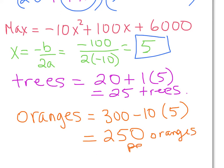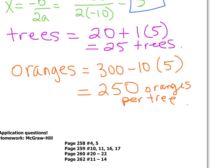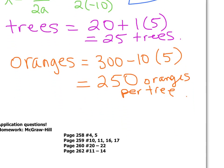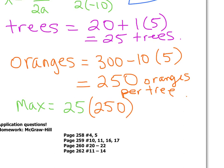Our maximum yield is 25 trees times 250 oranges per tree, giving a total yield for the entire orchard of six thousand two hundred and fifty oranges.